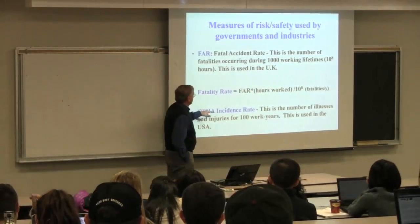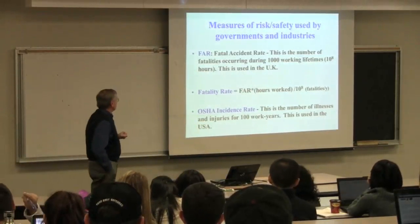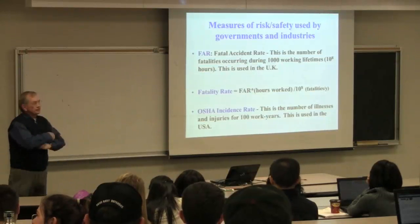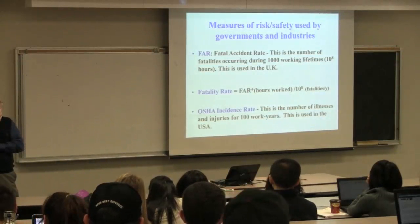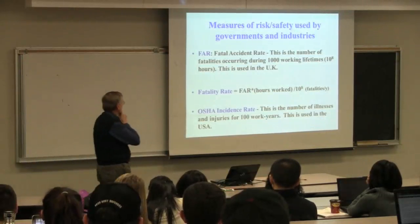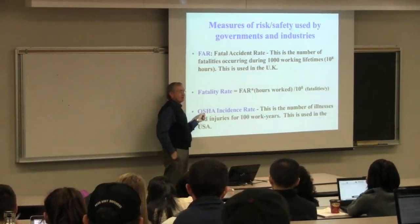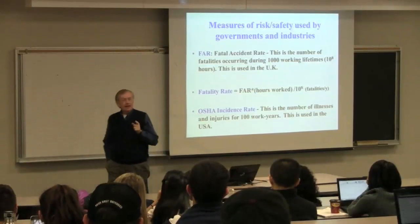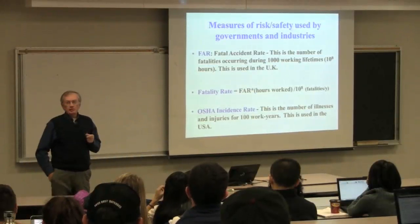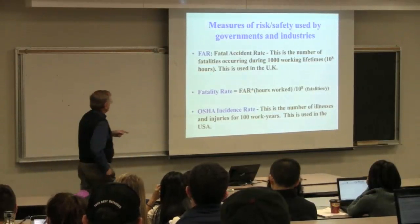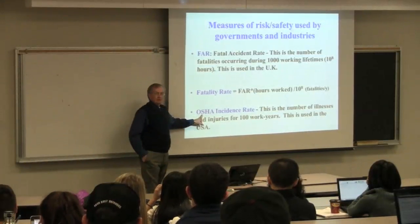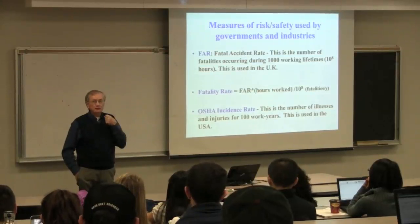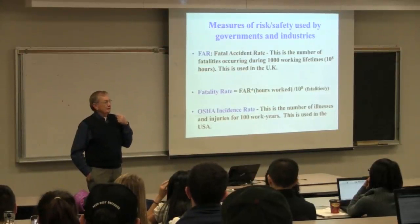In the States, they use the OSHA incident rate — the number of illnesses and injuries for about 100 work years. One of the accidents we're going to look at, 15 people died. Fifteen people died in that accident, and in that year, the safety manager of the plant received a bonus — because the OSHA incidence rate was very low. Very few people were injured, but 15 people were killed. Doesn't make any sense. The guy took the money, but then the newspapers found out about it and shamed him into giving it back.